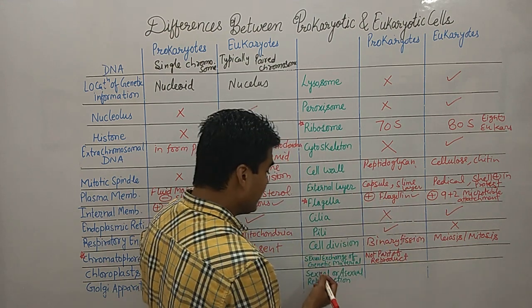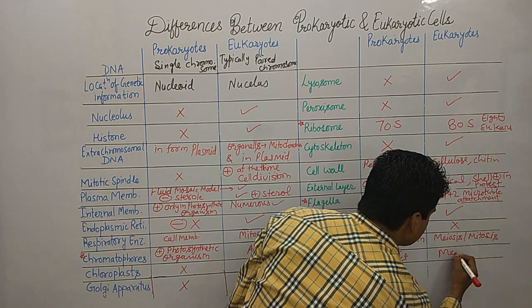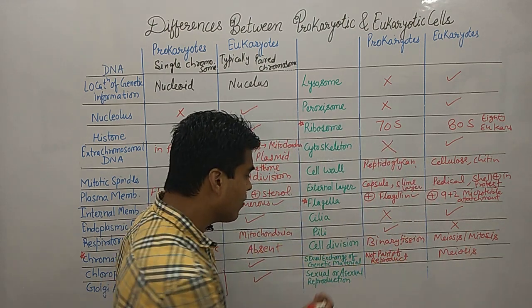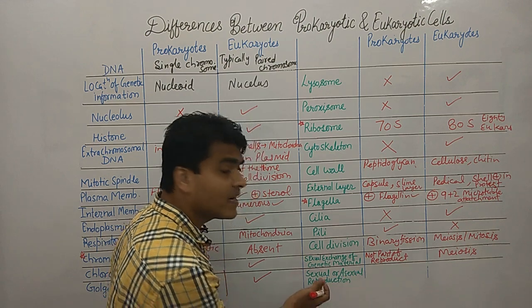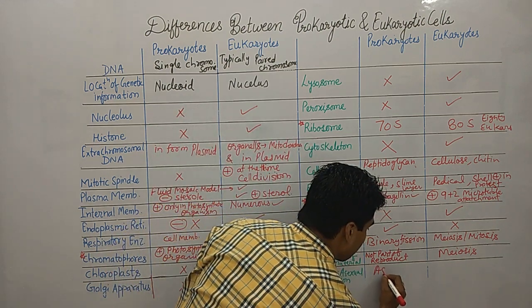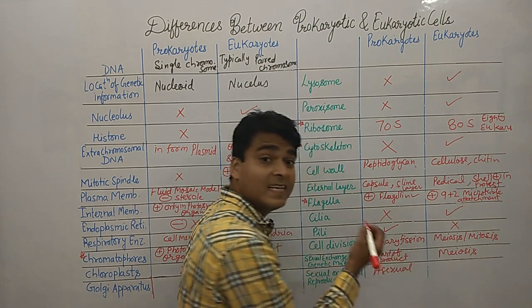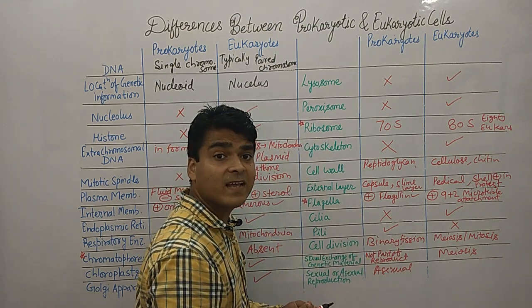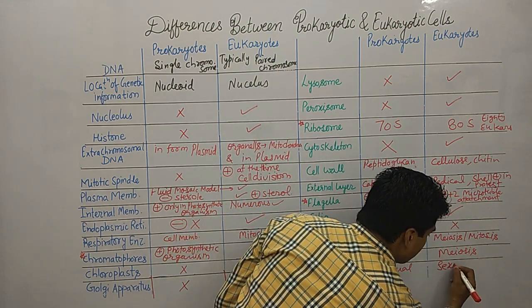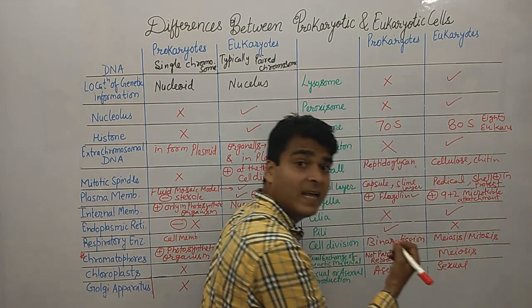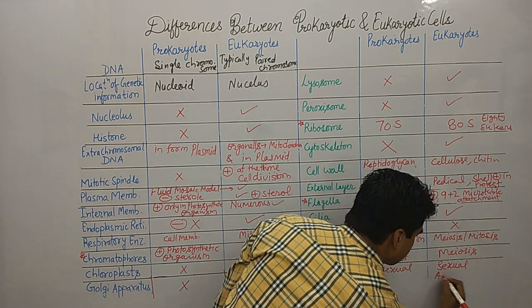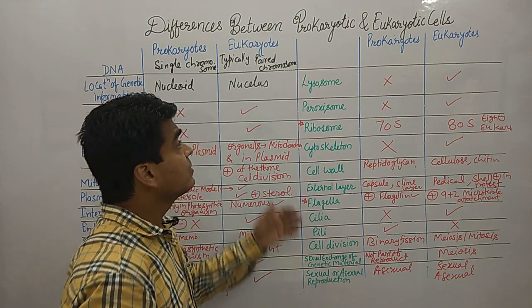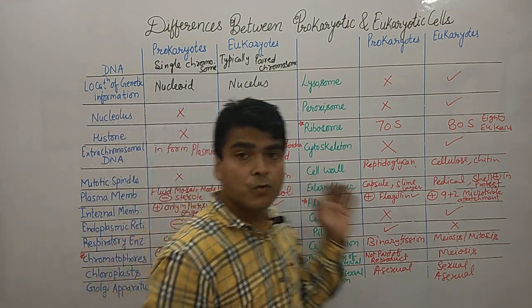In eukaryotes, sexual exchange of genetic material is part of meiosis. Generally, prokaryotes reproduce asexually, while eukaryotes use both sexual and asexual methods — most often sexual reproduction. This covers all the major differences between prokaryote and eukaryote cells.